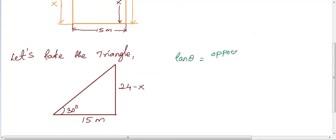Tan theta is equal to opposite divided by adjacent side. So, here theta is equal to 30 degree. So, tan 30 is equal to 24 minus x divided by 15.